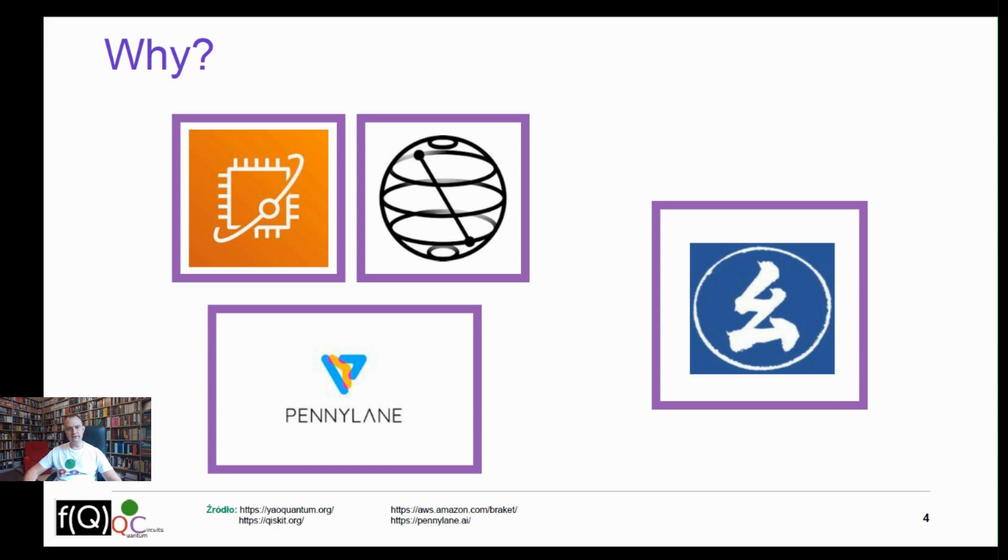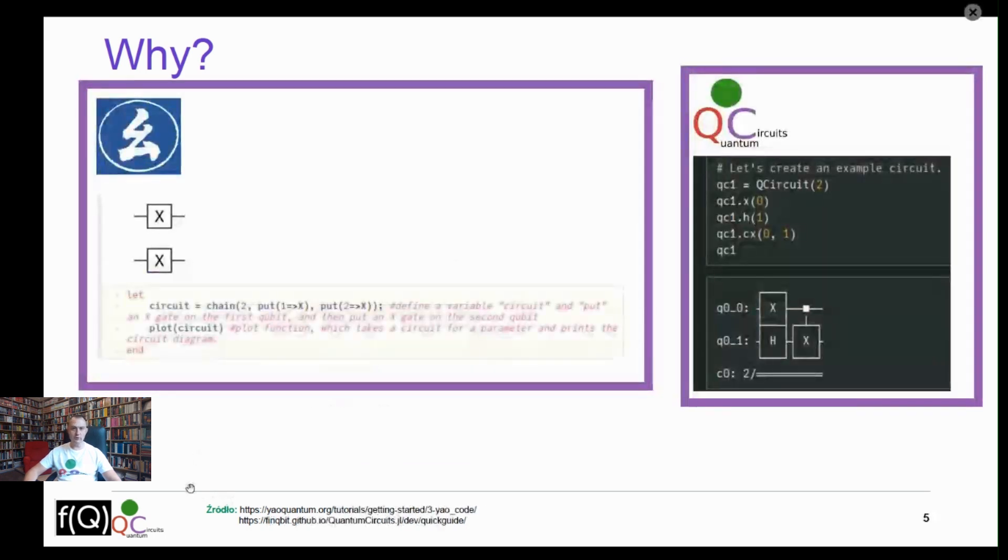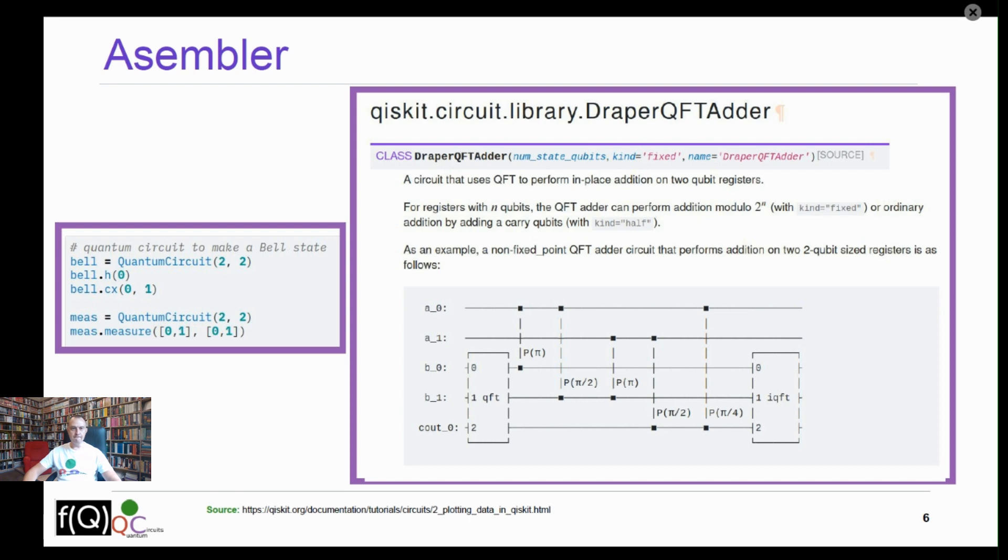But at the current state of quantum systems in quantum machine learning, we mostly play with the simulator. And in Yao, we cannot use the well-known from Qiskit quantum notation, and for some users it looks strange. But more importantly, the other library allows you to program on the quantum computer on the assembler level.